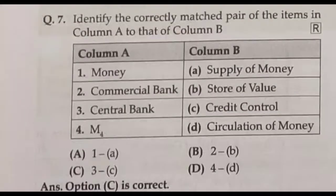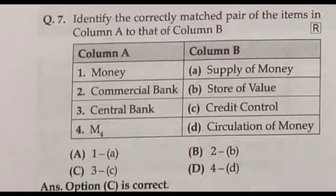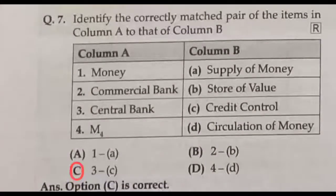Question number seven: identify the correctly matched pair of items in column A to column B. Column A lists: money, money supply, commercial bank, store of value, central bank, credit control. Actually, the central bank is responsible for controlling the credit. So that is the correct answer — option C is the correct answer.